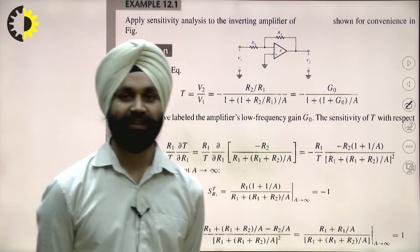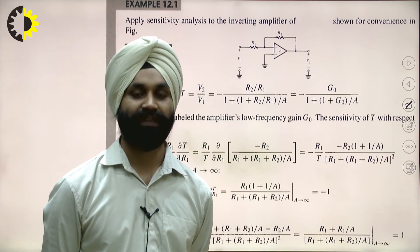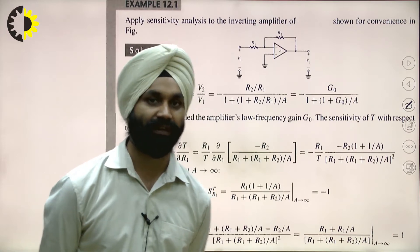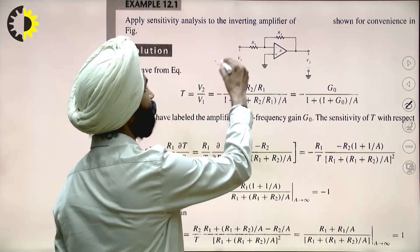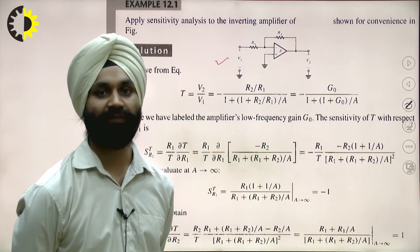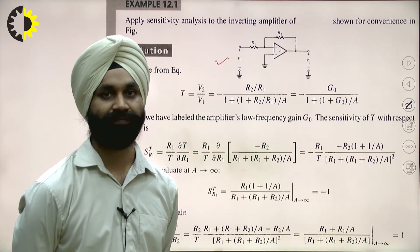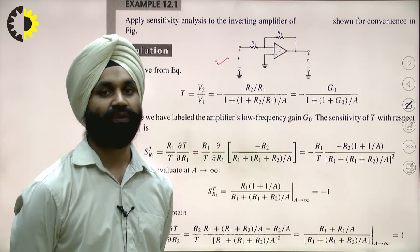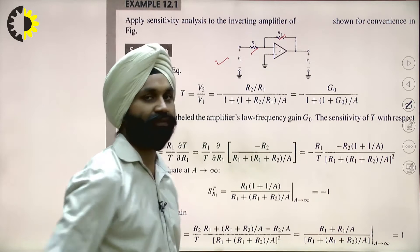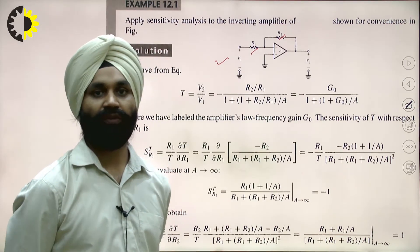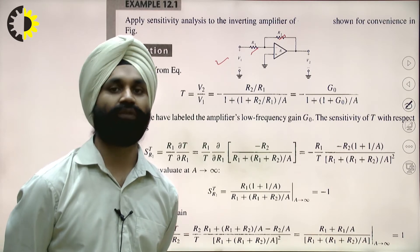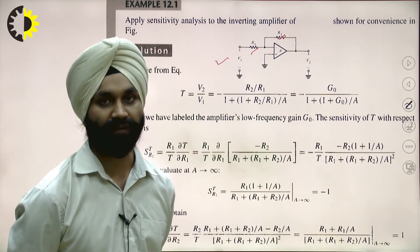To see the effect of sensitivity, let's suppose we have a circuit which is an inverting amplifier. This has input variable V1 and V2 is the output. R1 and R2 are the two resistances — R1 is the input resistance and R2 is the feedback resistance. If we want to find out the sensitivity of the transfer function, first we need to know this transfer function.